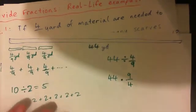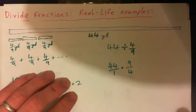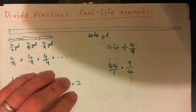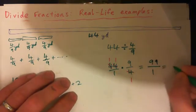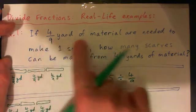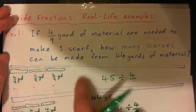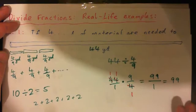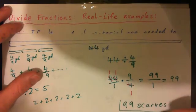Can you turn 44 into a fraction? 44 over 1. Now can we cross-cancel anything? 4 into 4 goes once, and 4 into this 4 goes once, so we get 11. This gives me 11 times 9, which is 99 over 1, which of course gives me 99. So the question was: if 4 ninths of material are needed to make one scarf, how many scarves can be made from 44 yards? How many 4 ninths are contained in 44? We figured out 99. So the answer is 99 scarves.